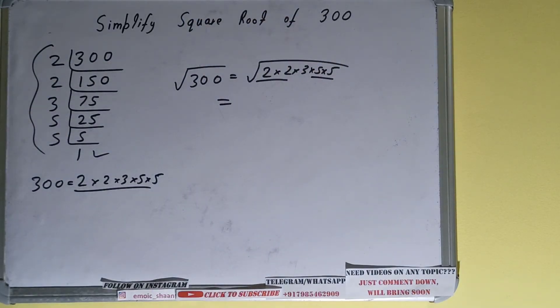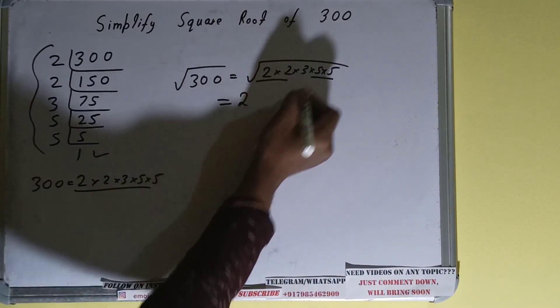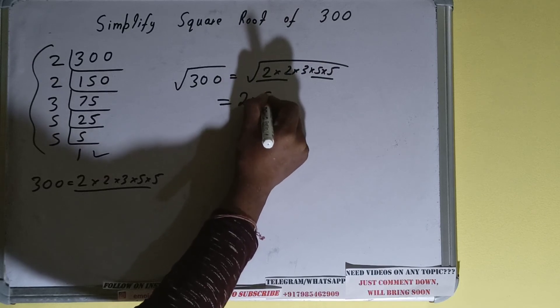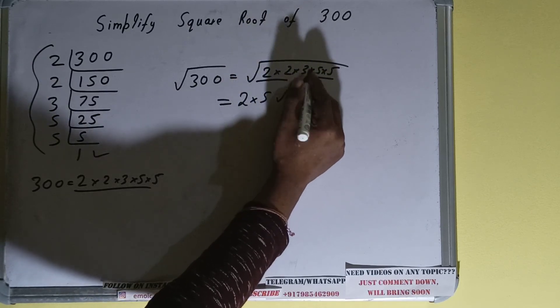For each pair you can bring one number outside. This is a pair of two, so you can write one 2 outside. This is a pair of five, so you can write one 5 outside. And this 3 did not form any pair, so this will stay inside.